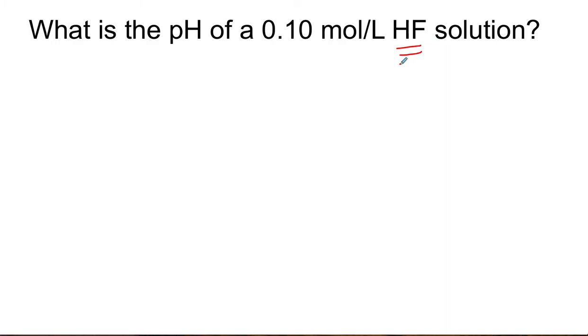First you need to identify that HF is in fact an acid and you're going to need the Ka from your data booklet in order to solve this. The equilibrium constant for the acid is 6.3 times 10 to the negative 4.